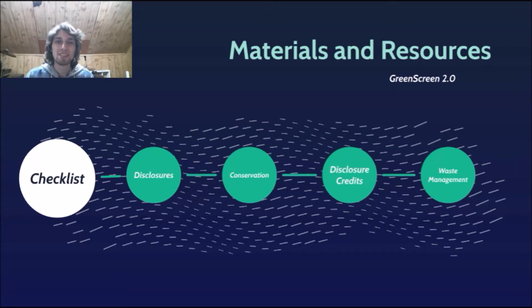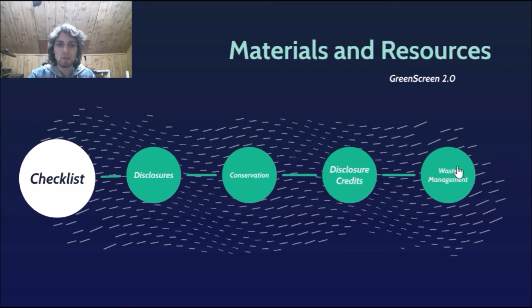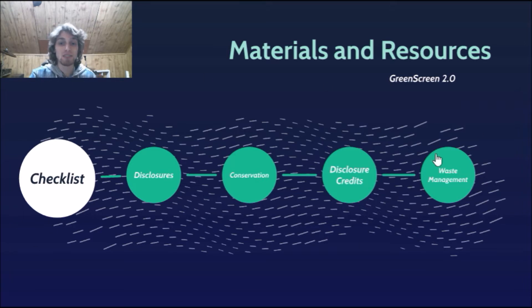Hello everyone and welcome to the materials and resources category for this LEED Green Associate exam tutorial. One of the first things you'll notice if you're into sustainability is that this kind of looks like a life cycle, with extraction on one end and disposal on the right. This is an open, cradle-to-grave system, which is not very sustainable. We want to go for a cradle-to-cradle mentality and a closed loop system — not a line but more of a circle.